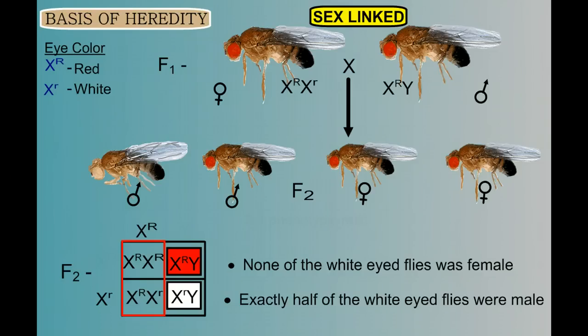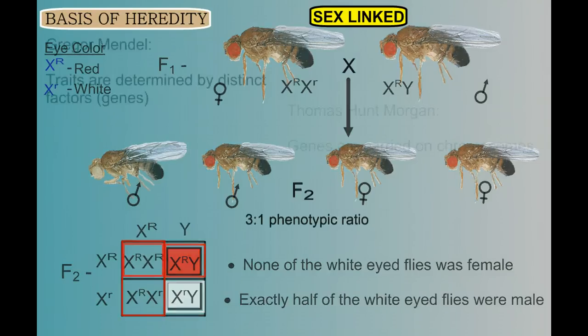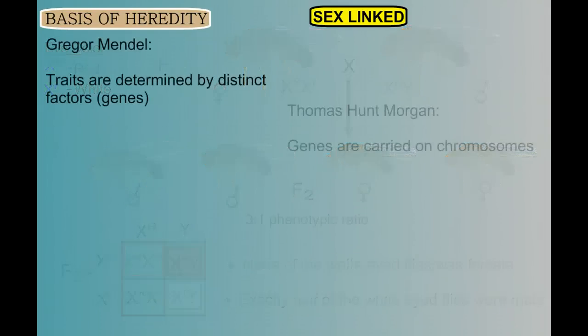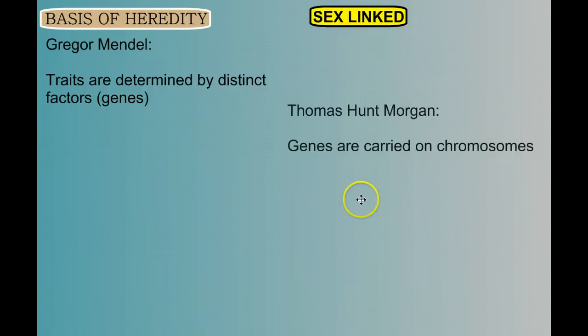So there you have it — a very famous experiment by Thomas Hunt Morgan. While Gregor Mendel told us that traits are determined by distinct factors called genes, Morgan tells us that these genes are carried on chromosomes.